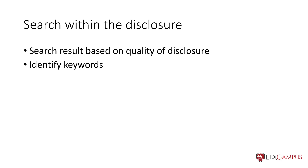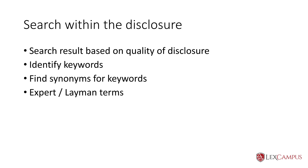You have to identify keywords because an invention is searched through keywords. You should also find out the synonyms for keywords, because words that can be alternatively used should also be searched. You would also look at words used by experts as well as words used by laymen. You would normally avoid trademarks and use a generic word instead of a brand name.